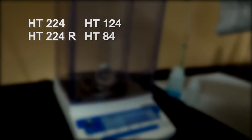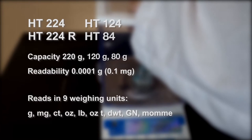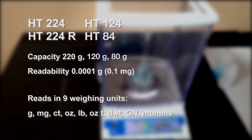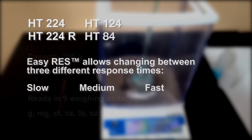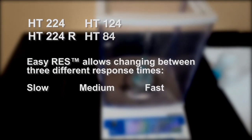The HT series provides analytical weighing at 0.1 milligrams and reads in 9 weighing units. EasyRes allows you to change between three response times to suit your application.